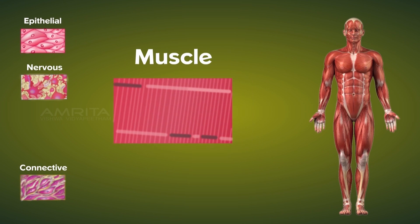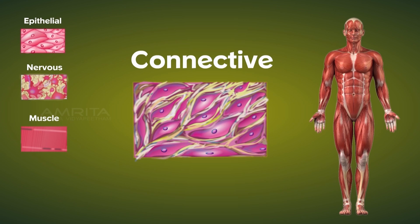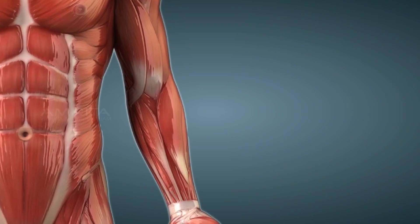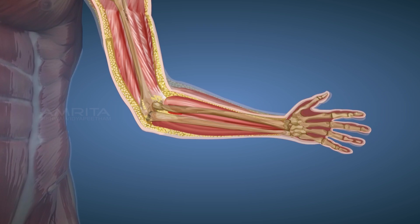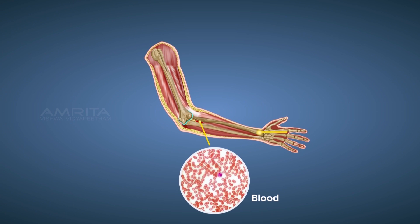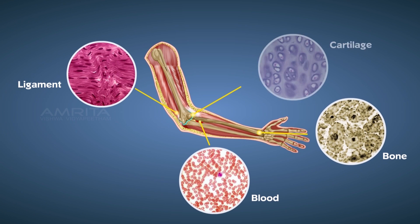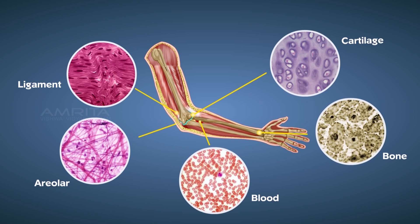The final tissue we will look at is the connective tissue that binds and supports body parts and transport materials. Connective tissues are subdivided into blood, bone, ligament, cartilage, areolar and adipose tissue.